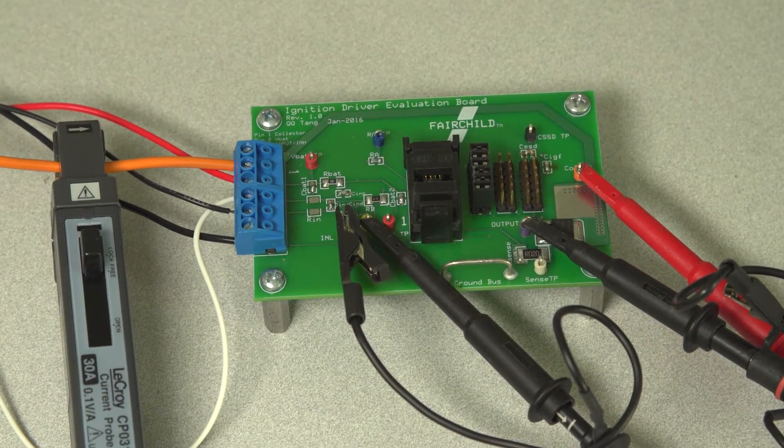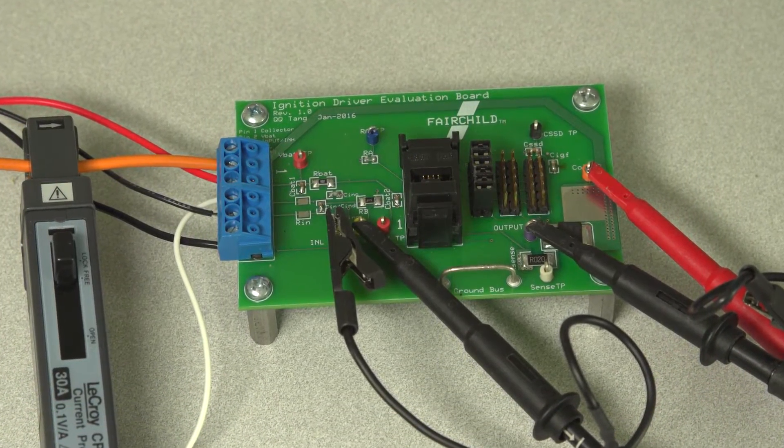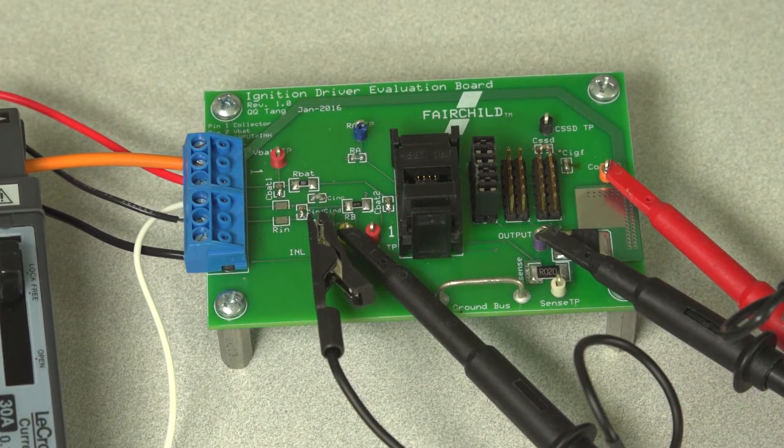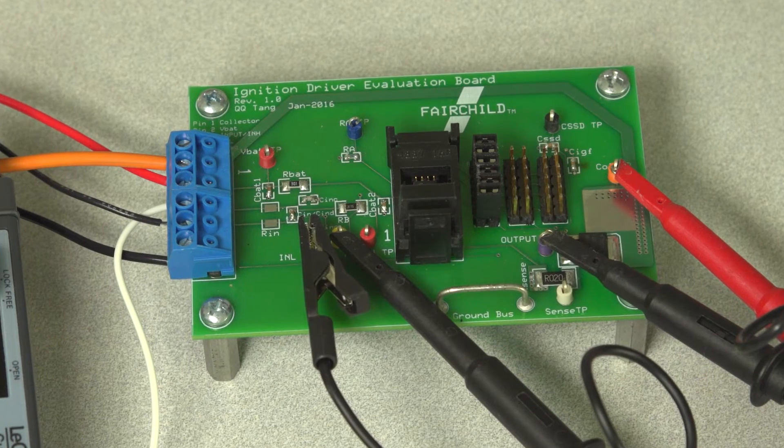Please contact your local sales office to request a product application board. We've built this demo board with the ECHO Spark 2 FGD3040G2 ignition IGBT, FAN1100 driver IC, and edge connector to interface with your application.